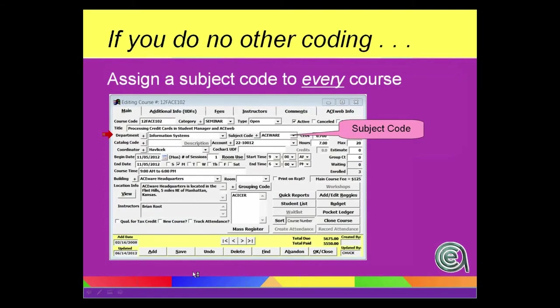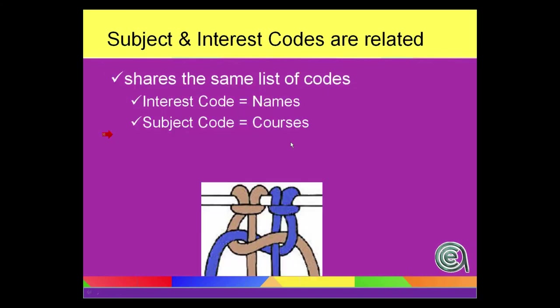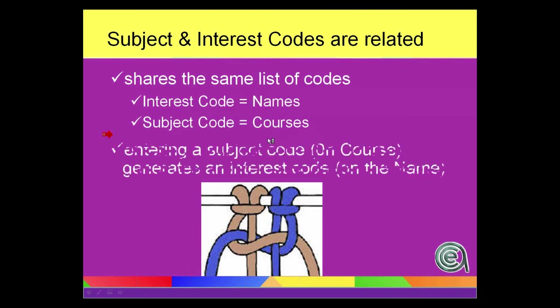A couple of things that we always want to emphasize: if you're going to do coding, if you're not going to do anything else, I am a believer - add a subject code to a course. That will allow you to have, anytime you have a subject code on the course, any student who registers for that class will automatically get an interest code on their name record.